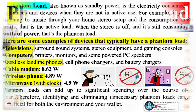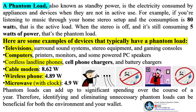A phantom load, also known as standby power, is the electricity consumed by appliances and devices when they are not in active use. For example, if you're listening to music through your home stereo setup and the consumption is 80 watts, that is the active load. When the stereo is off and it's still consuming 5 watts of power, that's the phantom load.